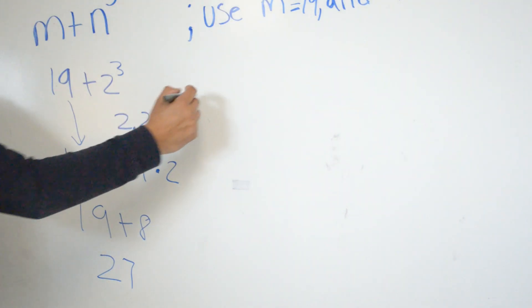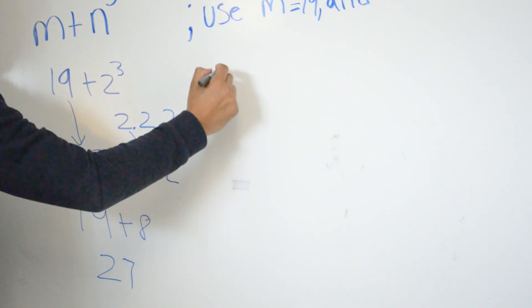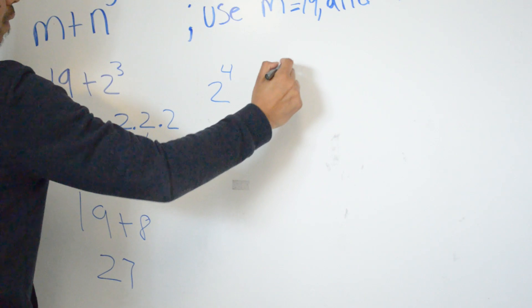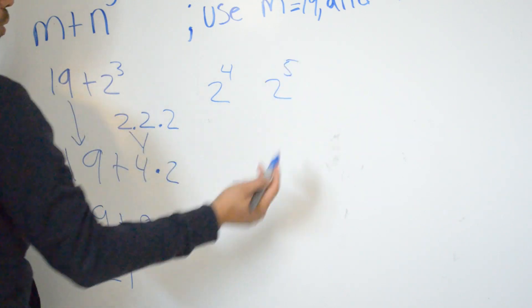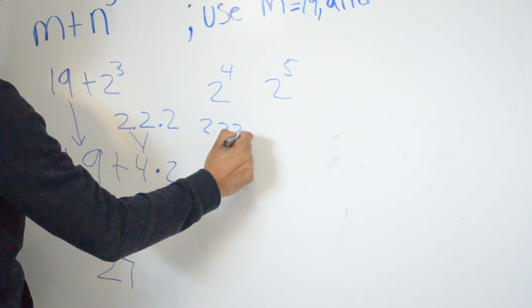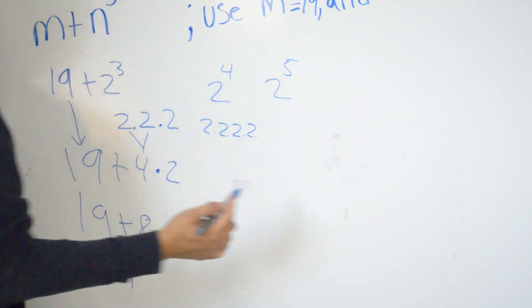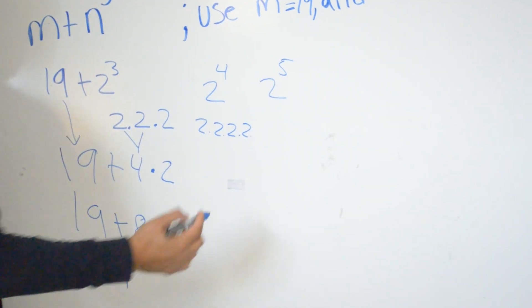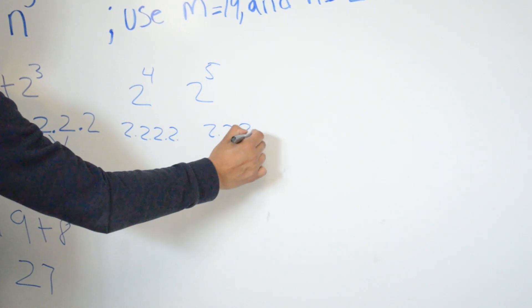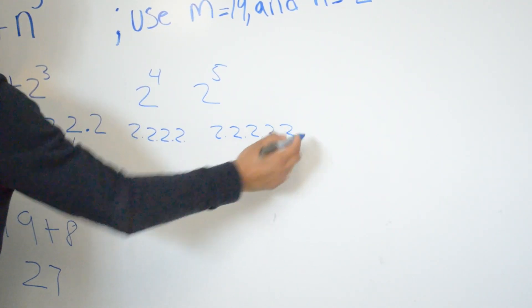When you have an exponent like 2 to the fifth power, you do the same thing: 2 times 2 times 2 times 2 times 2, and so on for higher powers.